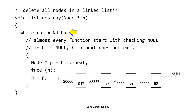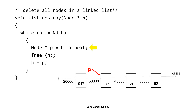Inside this function, another pointer p points to the node after h. We need to have two pointers: one points to the node that is about to be deleted, and one points to the next node. The next step is to free h, which releases the memory occupied by the node.